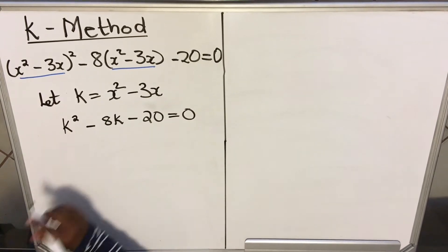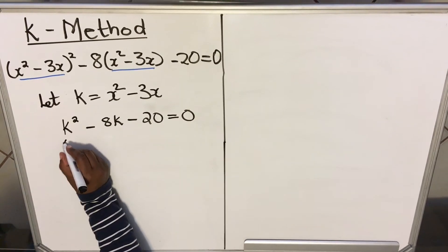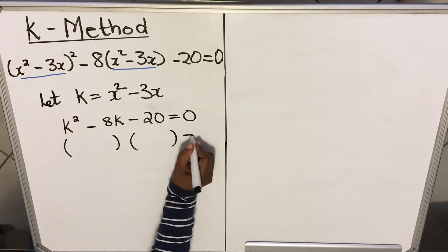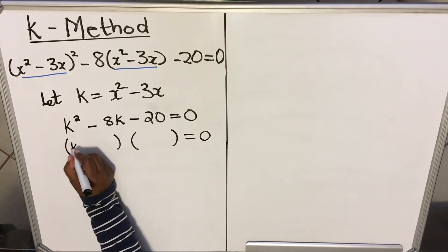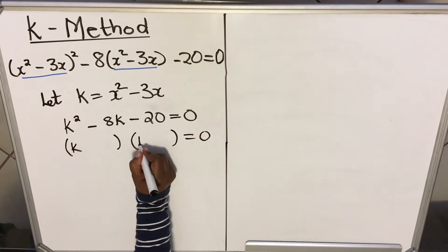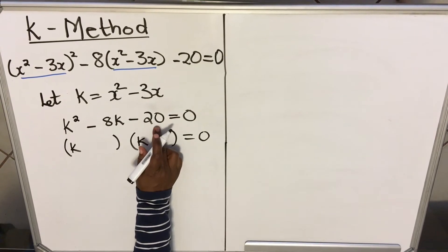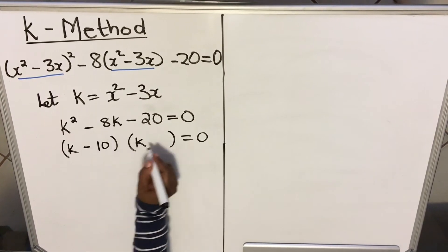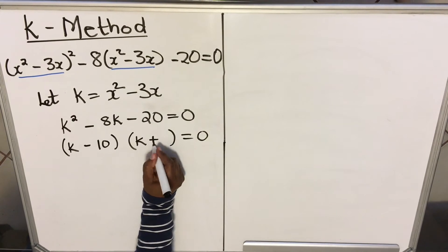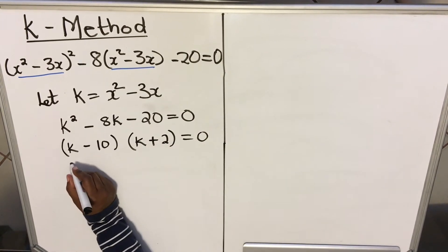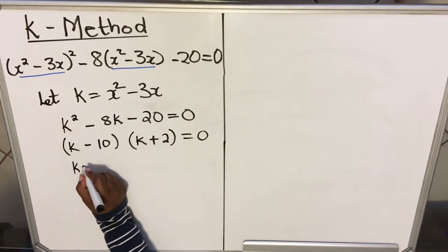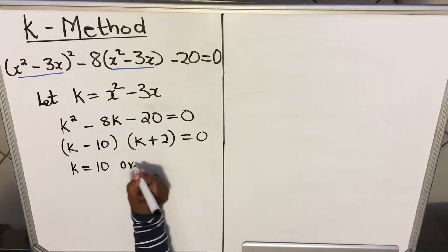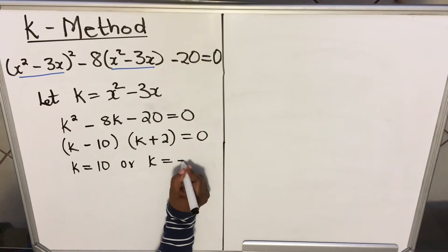Now you have a quadratic. You can use the quadratic formula, but factorizing is easier. So you factorize it equals 0. The factors of 20 are 10 and 2, so k equals 10 or k equals minus 2.